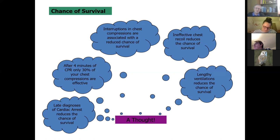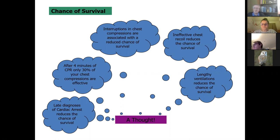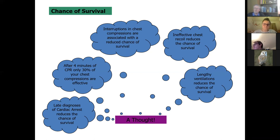If you have to stop chest compressions — to find a helper, to run for a defib unit — that reduces the chance of survival. Ineffective chest recoil also reduces the chance of survival: when you compress the chest you must let it return from the compression appropriately. Lengthy ventilations also reduce the chance of survival.